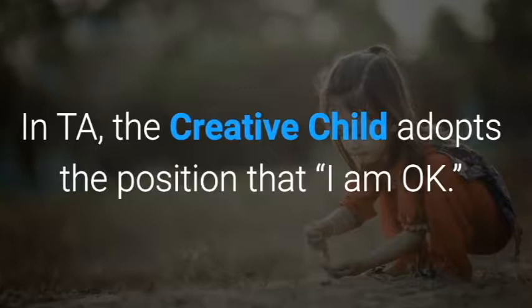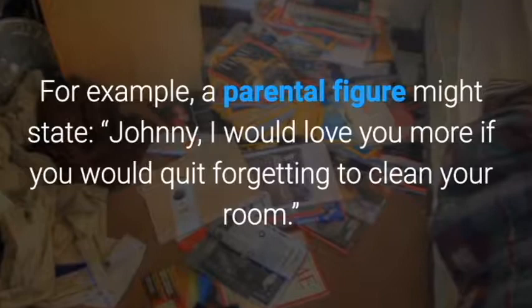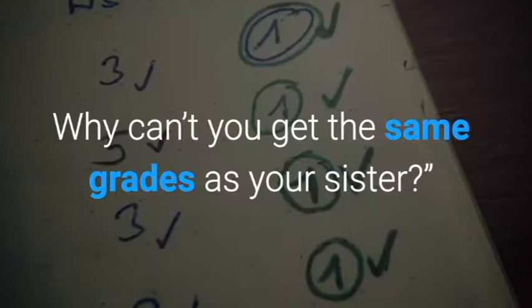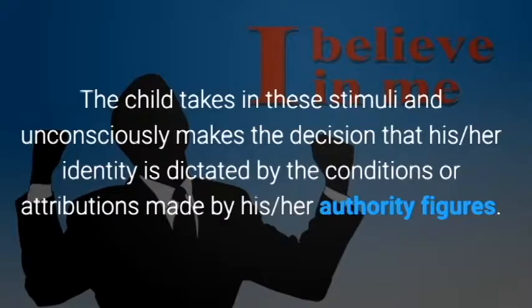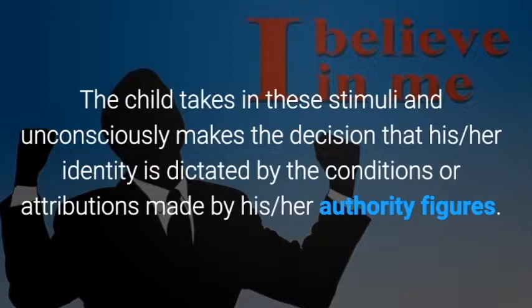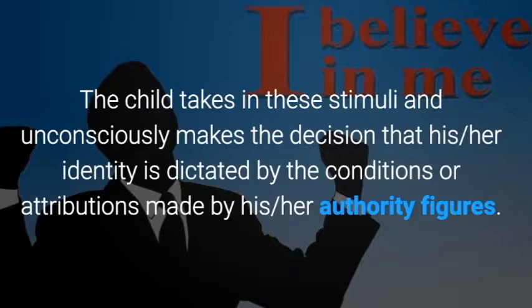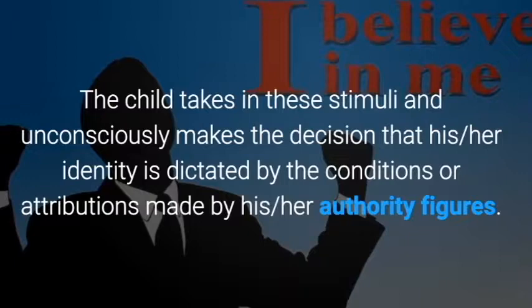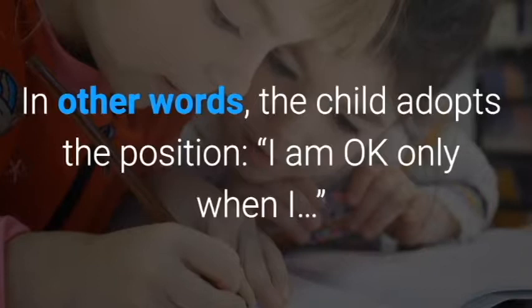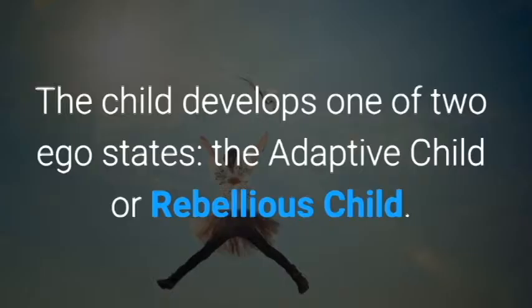In TA, the creative child adopts the position 'I'm okay.' For example, a parental figure might say, 'Johnny, I would love you more if you would quit forgetting to clean your room,' or 'You're such a dunce — why can't you get the same grades as your sister?' The child takes in these stimuli and unconsciously decides that his or her identity is dictated by conditions placed by authority figures. Like a Pavlovian dog, the child adopts positions such as 'I'm okay only when I clean my room' or 'I'm okay only when I get good grades.'